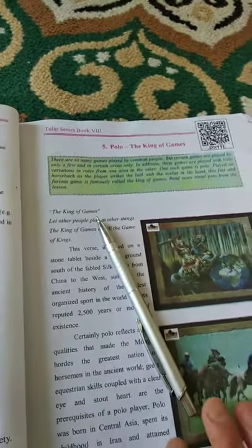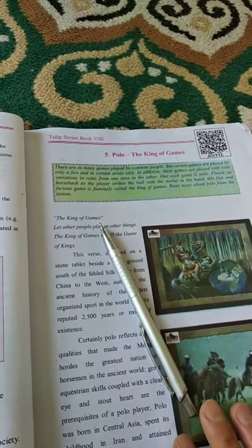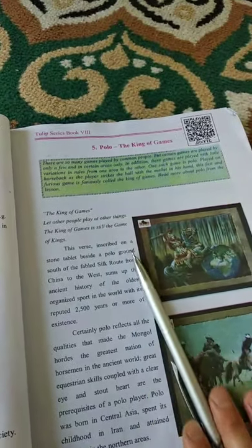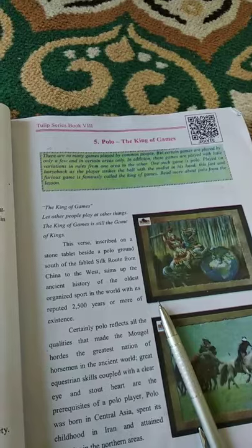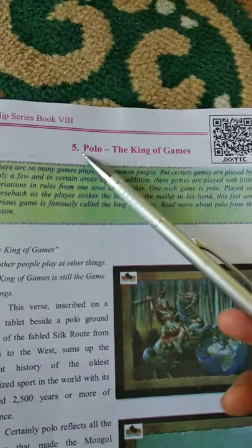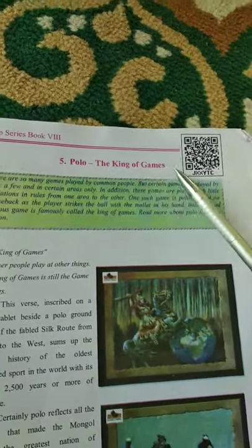Bismillah ar-Rahman ar-Rahim. As-salamu alaykum my dear students. It's class 8, subject English. Our topic is from the prose section. The title of this topic is Polo, the King of Games.